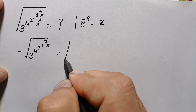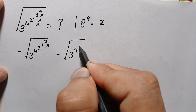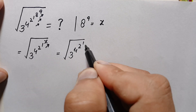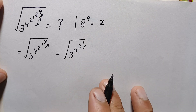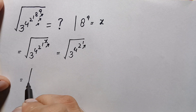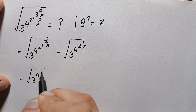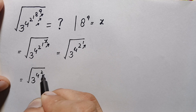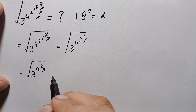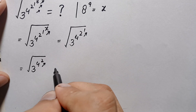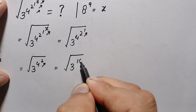Replacing that power with 1, we get: whole square root of 3 raised to power 4, raised to power 2, raised to power 1. Now 2 raised to power 1 is simply 2. Then we simplify 4 raised to power 2, which is 4 multiplied 2 times: 4 times 4 is 16. So this becomes 3 raised to power 16.